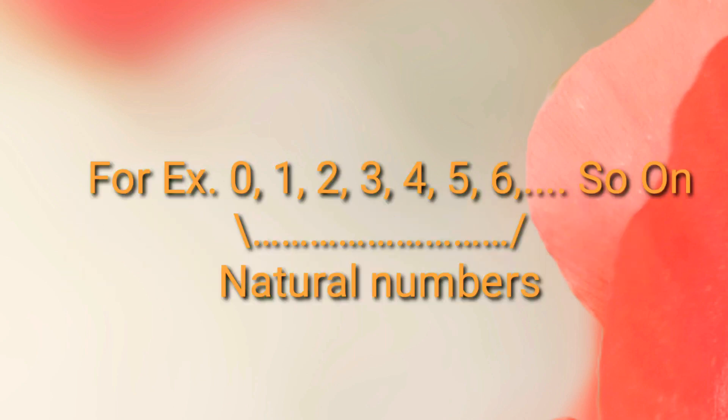For example, 0, 1, 2, 3, 4, 5, 6, and so on. All these numbers are natural numbers, and if we add one more number, that is 0, it becomes a whole number. The symbol used for whole numbers is W.